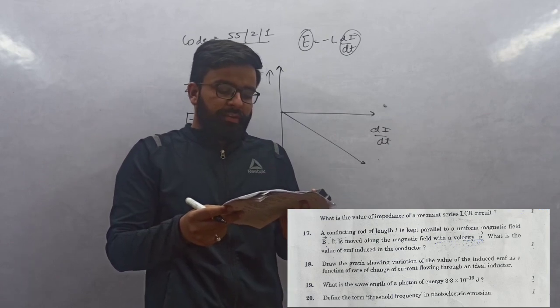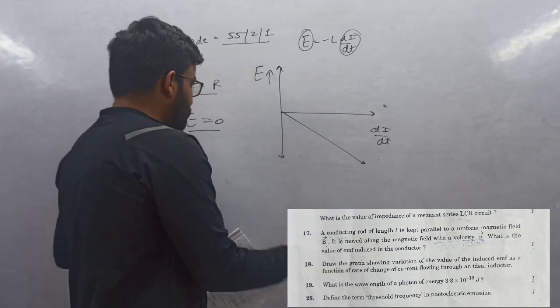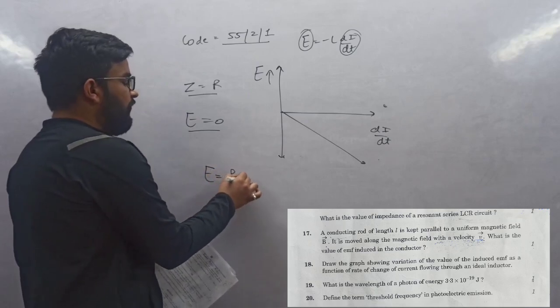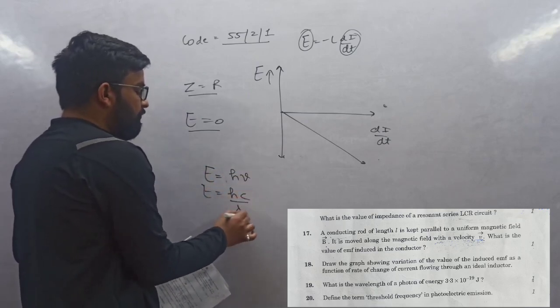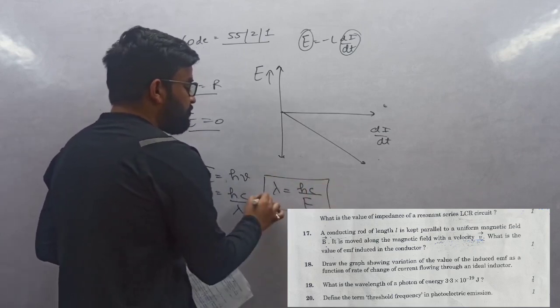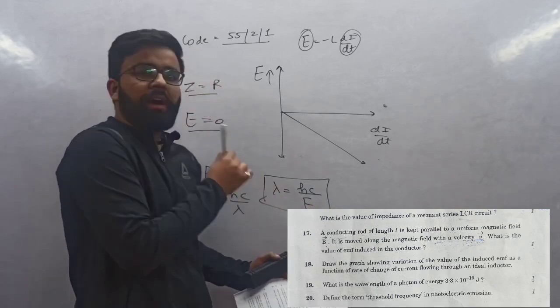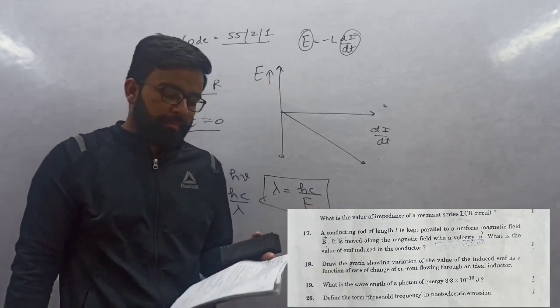Question 19: What is wavelength of photon of energy 3.3×10⁻¹⁹? Energy formula is hν. ν is c/λ, wavelength is hc/energy. Everything is given: energy is 3.3×10⁻¹⁹, h is 6.63×10⁻³⁴, and c is speed of light 3×10⁸.